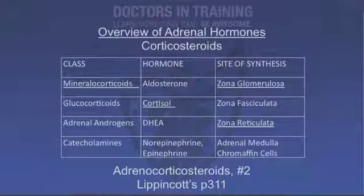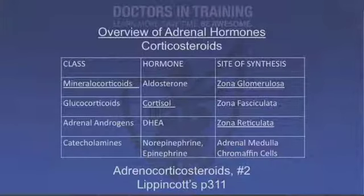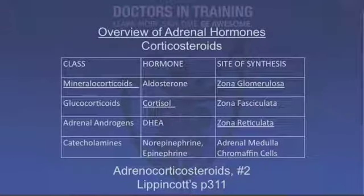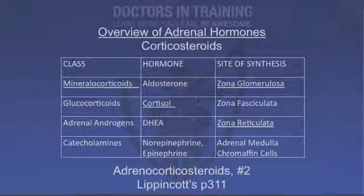There are several classes of adrenal hormones. First off are the corticosteroids — the mineralocorticoids, with the main one produced in the body being aldosterone, and the glucocorticoids, with the main one being cortisol. Then we have the adrenal androgens such as DHEA, which are covered in lecture 25. And the products of the adrenal medulla, the catecholamines including norepinephrine and epinephrine, are covered in lecture 4. So again, we're mainly talking about glucocorticoids and mineralocorticoids today.